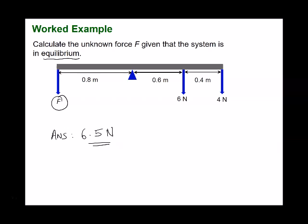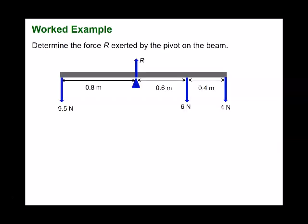To find the force R exerted by the pivot on the beam: without the pivot, the beam would drop due to the 4 N, 6 N, and 9.5 N downward forces. The pivot supports the beam with an upward force R, which we can find using the conditions of equilibrium.